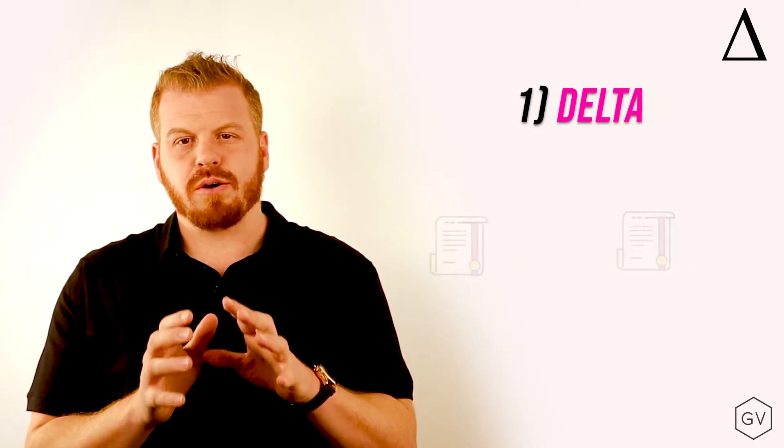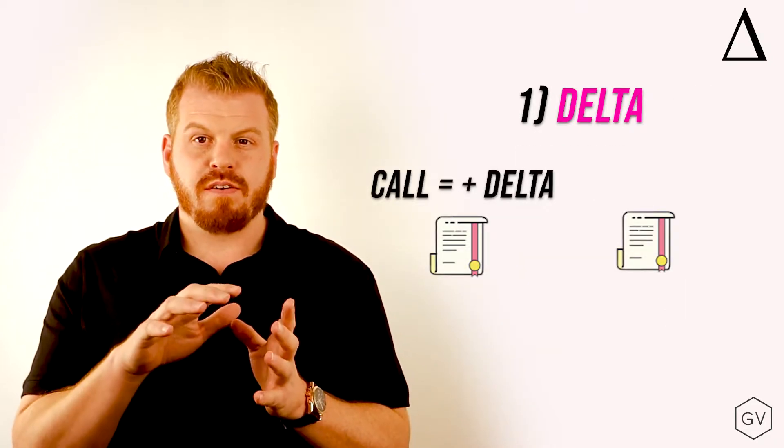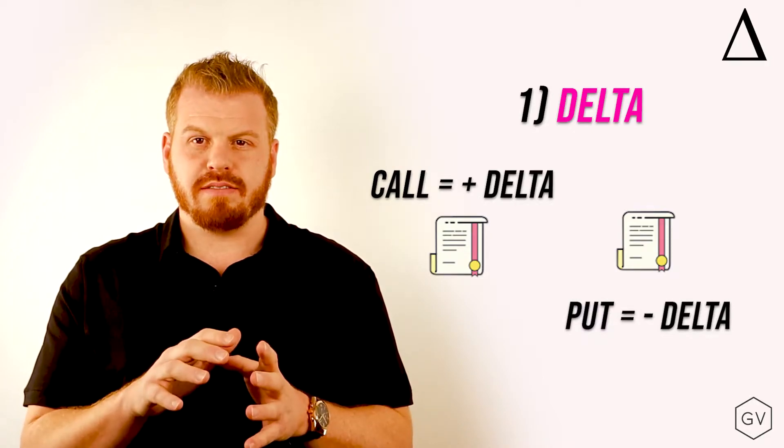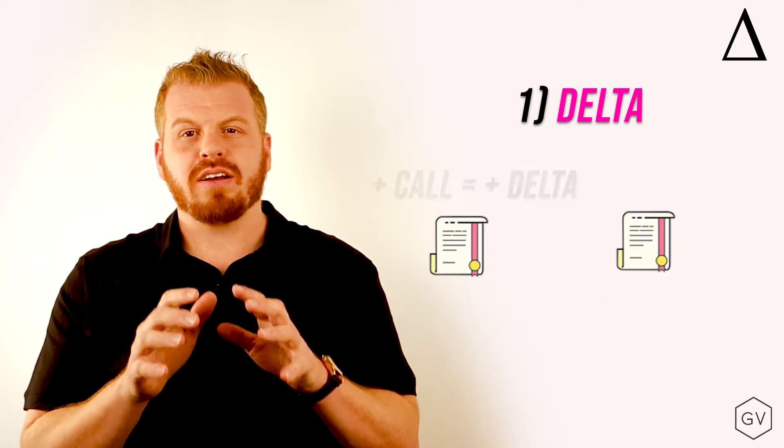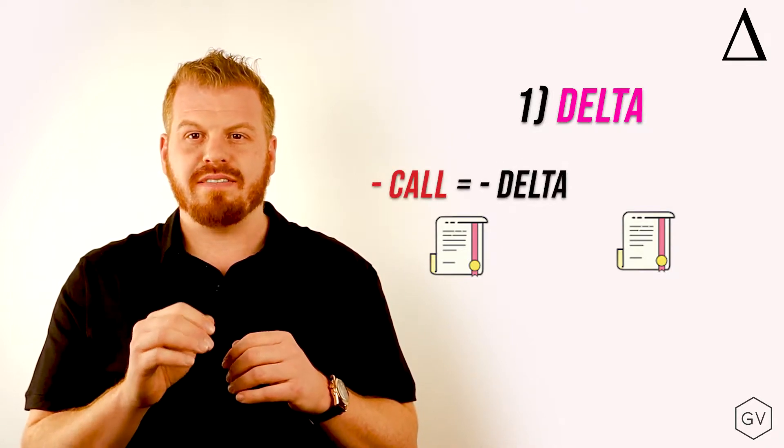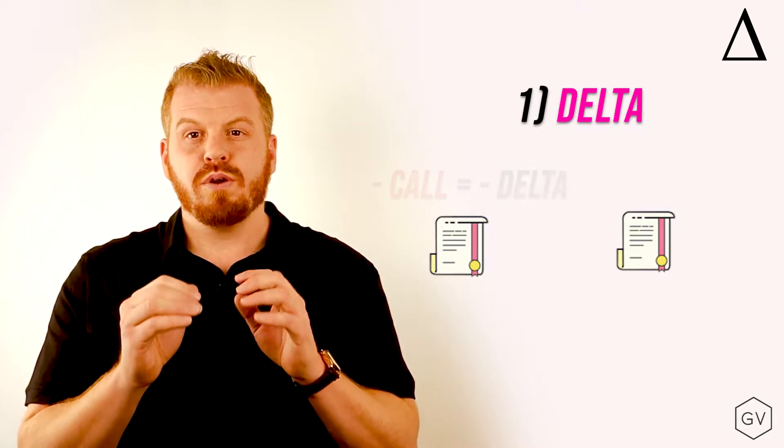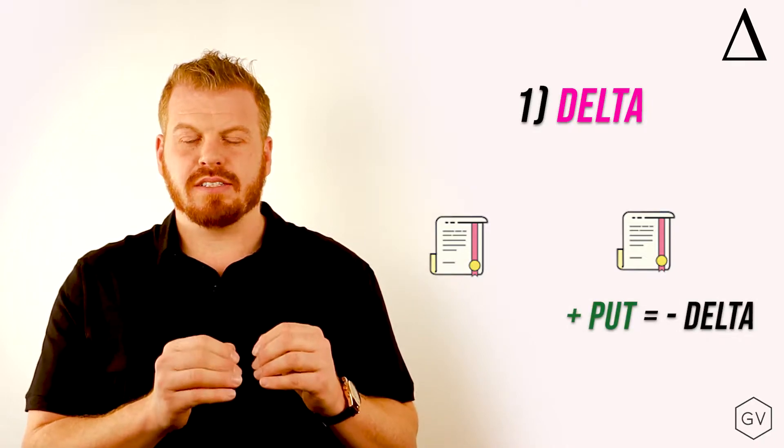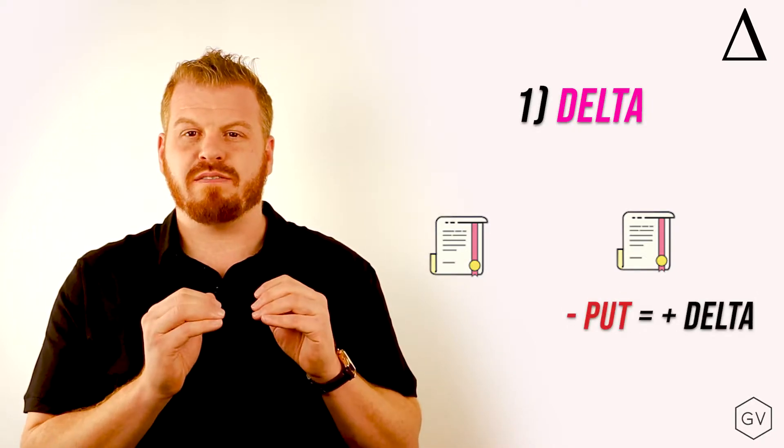For calls, Delta is going to be positive. For puts, Delta is going to be negative. When you buy a call, you will have a positive delta. When you sell a call, you will have a negative delta. When you buy a put, you will have a negative delta. And when you sell a put, you will have a positive delta.